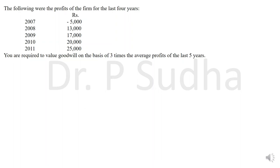Now, one more question under simple average. The difference from the previous problem is that for one year there is a loss of minus 5,000, and for the remaining years there is profit. In this case, how do we calculate average profit?